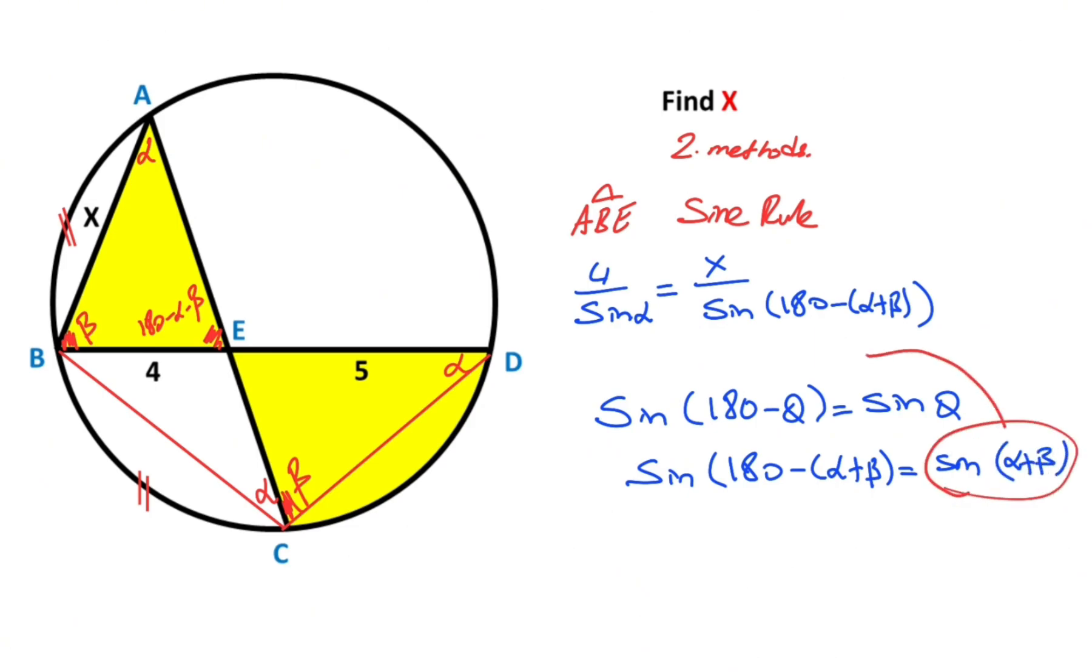That means sine 180 minus alpha plus beta is equal sine alpha plus beta. If we use this property for the question,